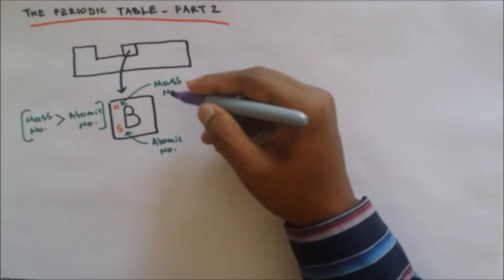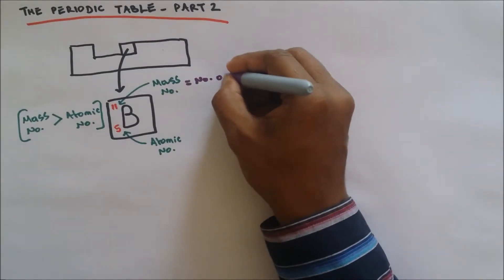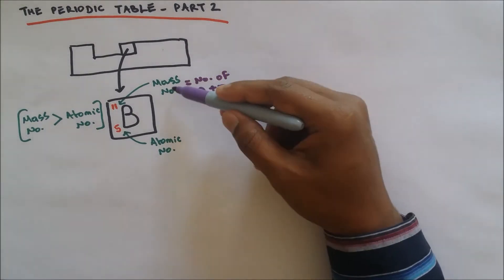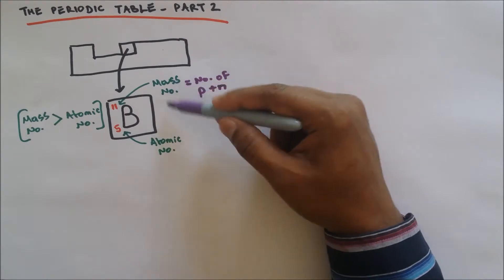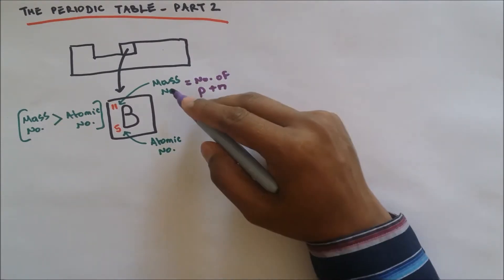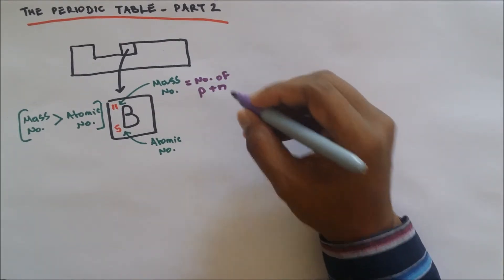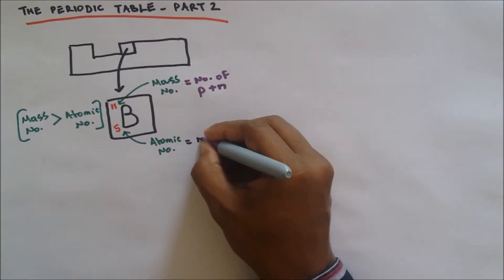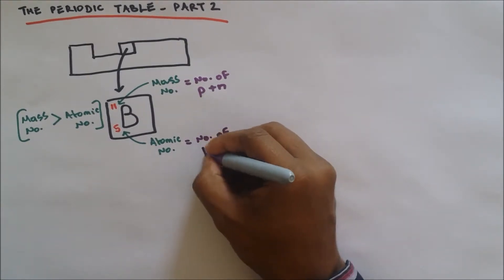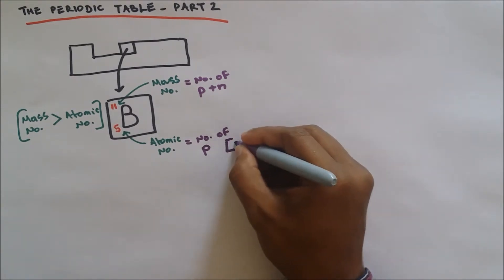Mass number reveals the number of protons plus neutrons. So mass number tells us the number of sub-particles inside the nucleus. Mass number is the number of protons and neutrons.